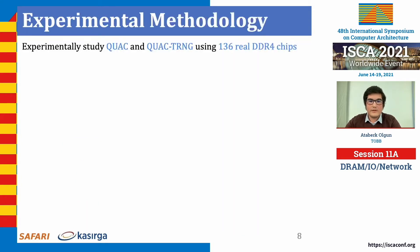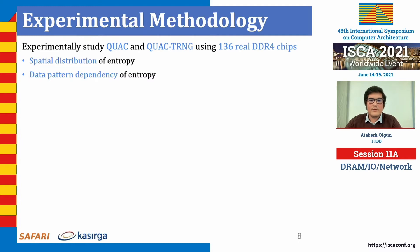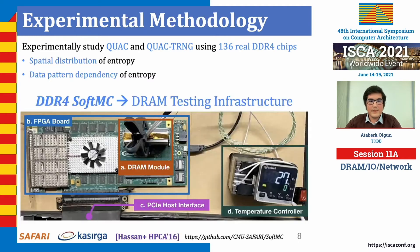We conducted a characterization study on 136 real DDR4 chips from SK Hynix to evaluate QoAC-TRNG and understand the randomness characteristics of values produced by QoAC operations, such as spatial distribution and data pattern dependency of entropy. We use a modified version of SoftMC, a DDR4 memory testing platform that lets us issue arbitrary DDR4 command sequences with any timing parameters, and we use rubber heaters and a temperature controller to maintain DRAM chips at 50 degrees Celsius.